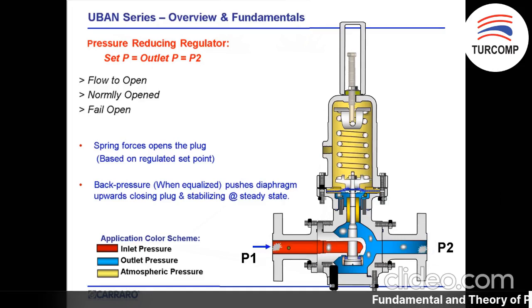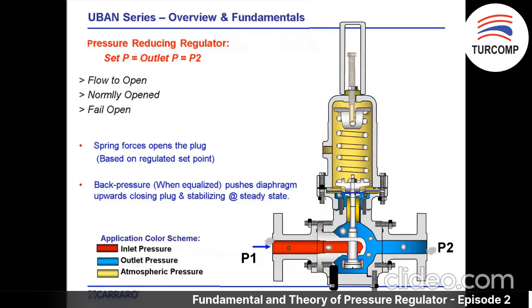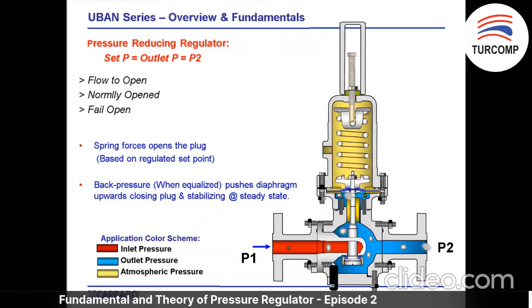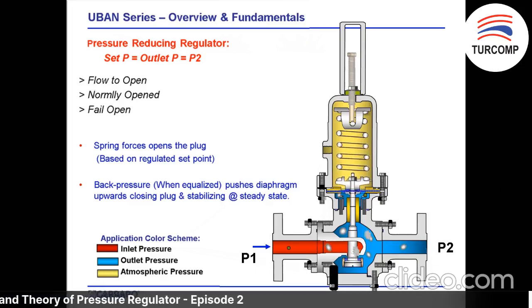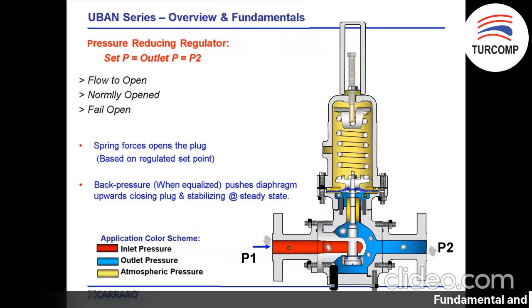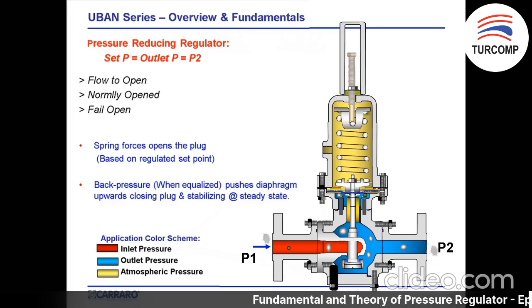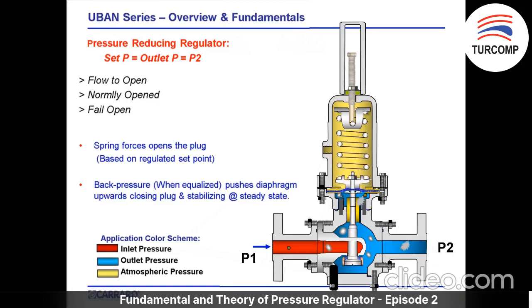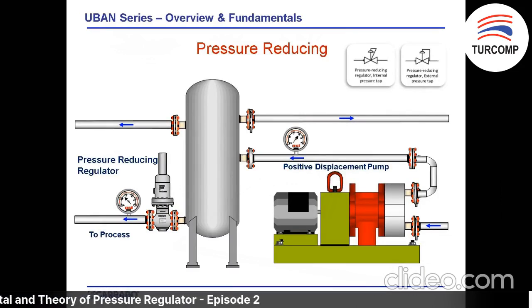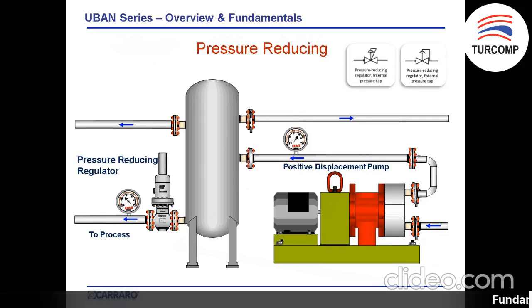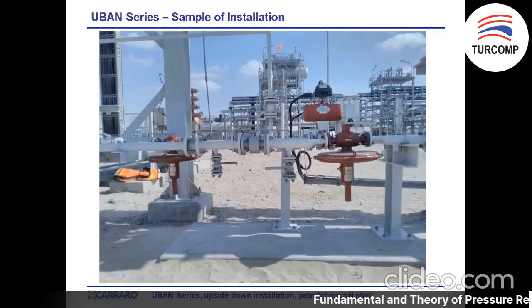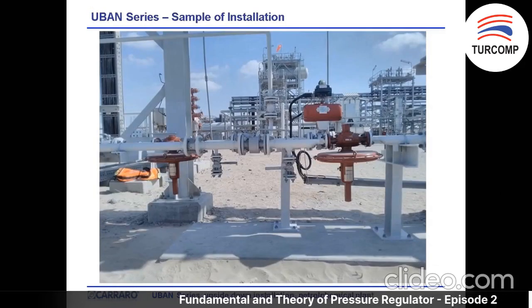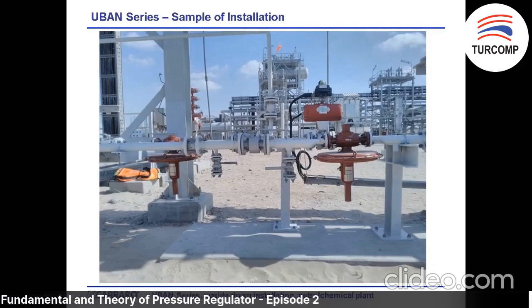In this picture you can recognize the particular design of the UBN model. The UBN has a split body with flanges connected to the body, so the face-to-face dimension can be changed to meet customer requirements. Here is a schematic example of a UBN installed to regulate pressure from the tank to the process, and in this real photo you can see an example of UBN regulator installation — in this case an upside-down installation.